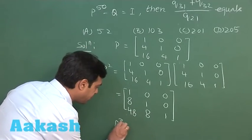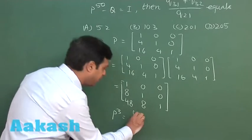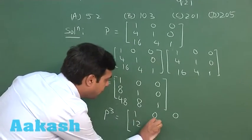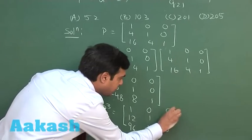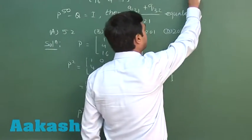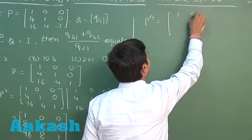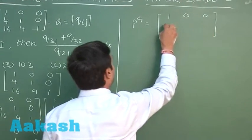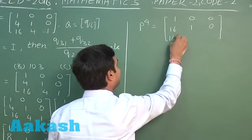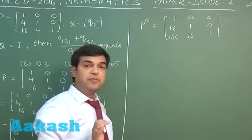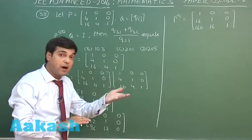Computing P³ gives rows (1,0,0), (12,1,0), (96,12,1). Then P⁴ gives (1,0,0), (16,1,0), (160,16,1). The pattern is clear: the (2,1) entry for Pⁿ is 4n, giving values 4, 8, 12, 16 for powers 1 through 4.